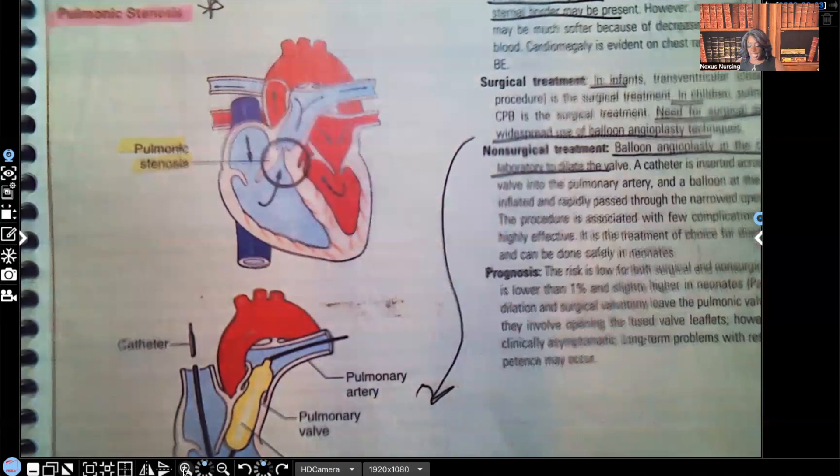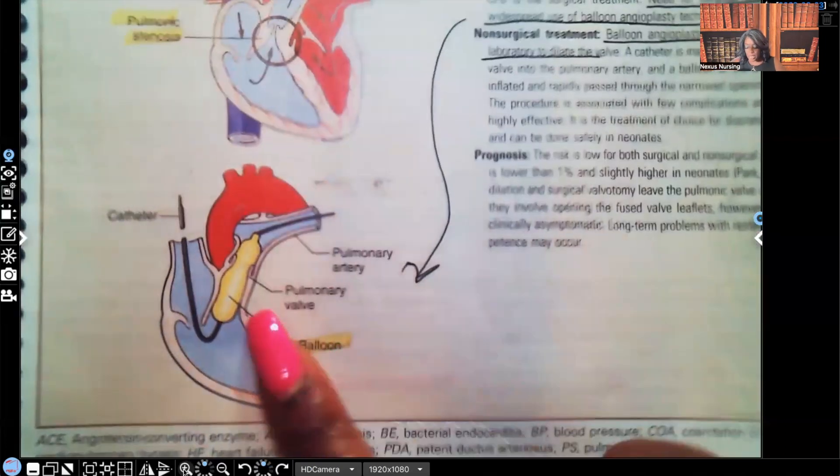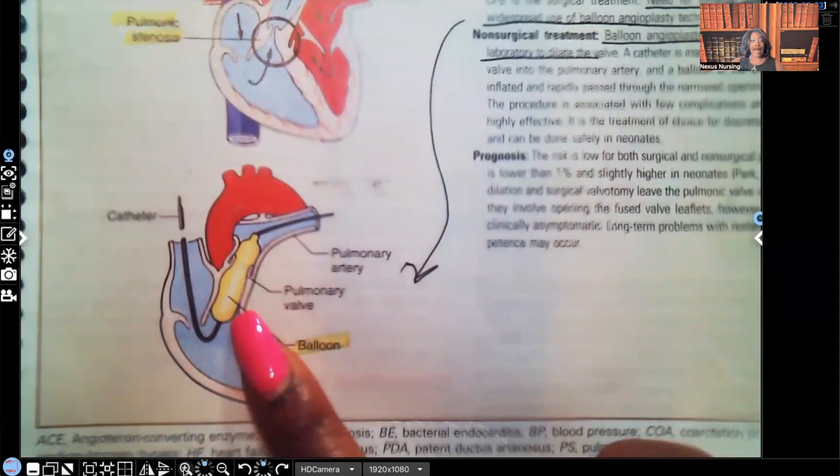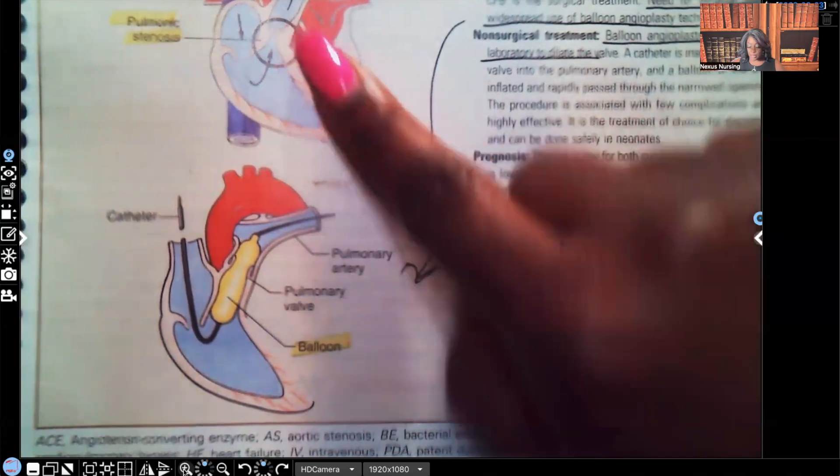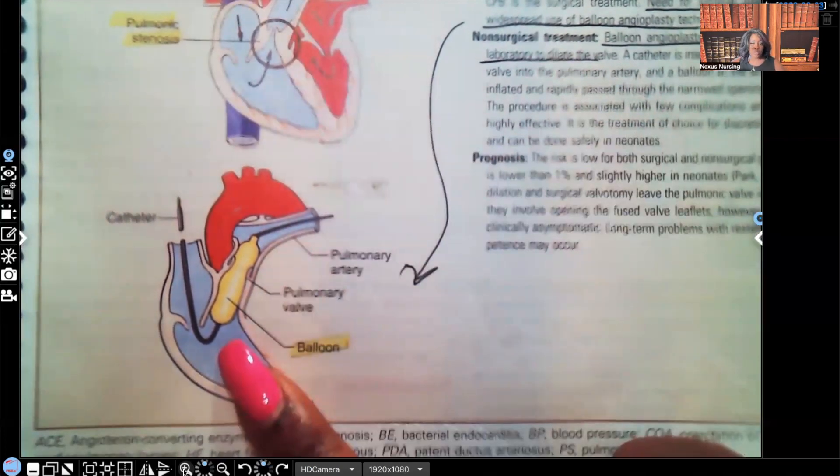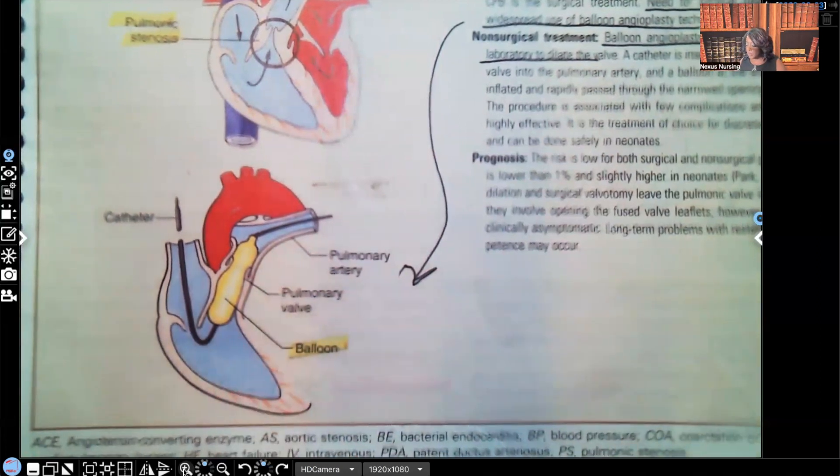The unoxygenated blood is trying to get to the lungs to pick up oxygen, but it's very narrow. Look at the balloon angioplasty—look at what they do. The balloon opens up that narrowed area. See how narrow and small it was? Now they open it up so the unoxygenated blood can get through to the lungs to pick up oxygen.